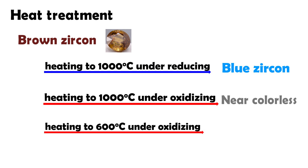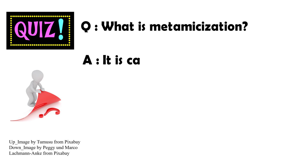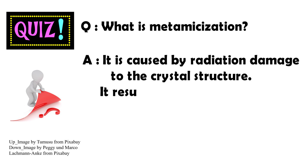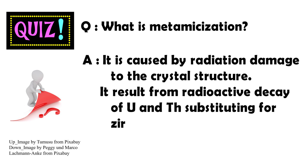Let's solve a quiz. Question: What is metamictization? Answer: It is caused by radiation damage to the crystal structure, resulting from radioactive decay of uranium and thorium substituting for Zirconium.